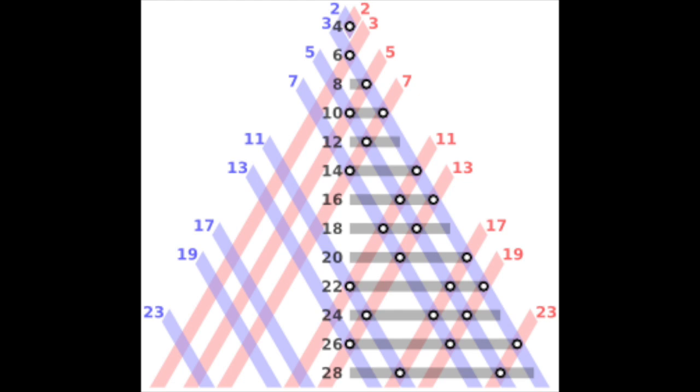The sums of the two primes are the intersections of one red and one blue line marked by a circle. Thus, the circles on a given horizontal line give all partitions of the corresponding even integer into two primes.